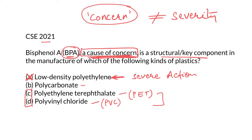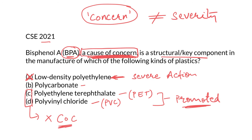When something is promoted very aggressively, it is certainly not a cause of concern — the government would not allow such aggressive promotion if it were. Those thin poly bags were used by the unorganized sector and caused massive problems. If something is used by corporates — the organized sector — there are already regulations ensuring unsustainable use or severe consequences are not present. So PET bottles and PVC pipes are not a cause of concern and therefore will not contain BPA. Options C and D are eliminated.